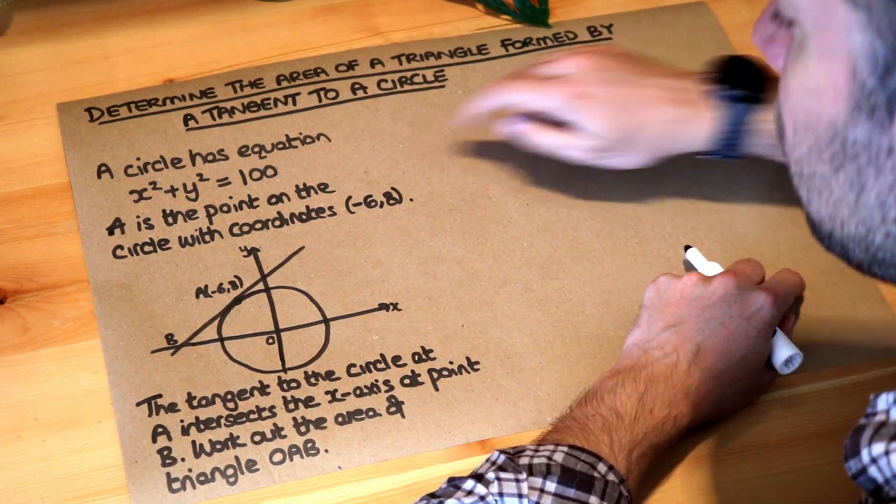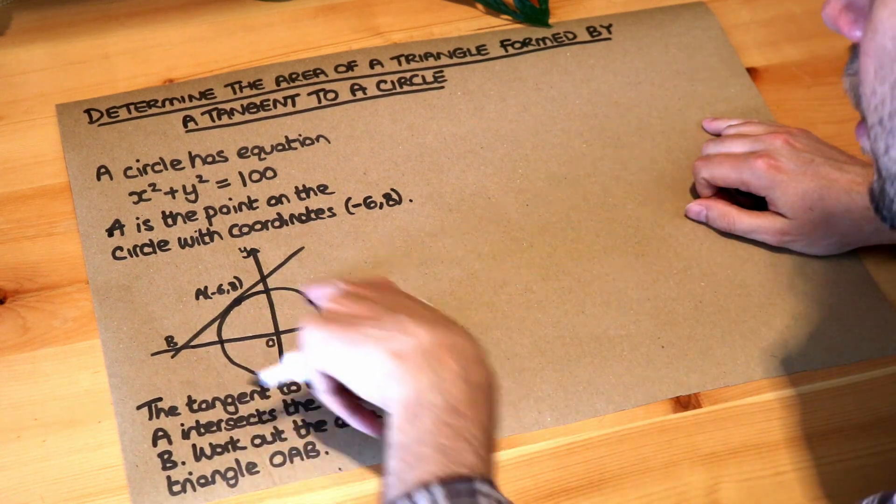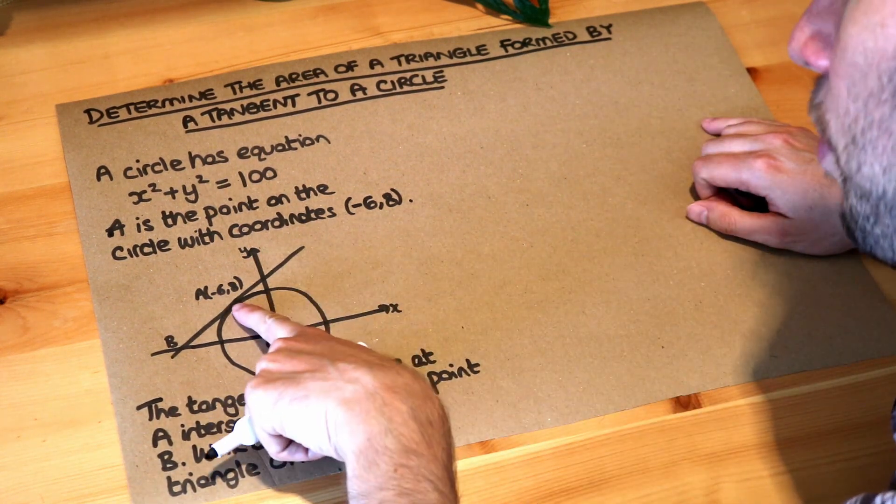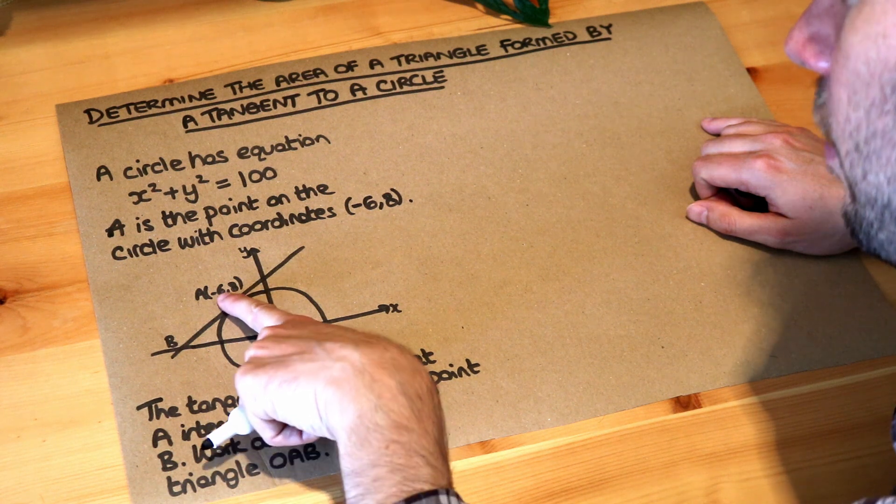A circle has equation x squared plus y squared equals 100, so this circle here. A is the point on the circle with coordinates minus 6, 8.